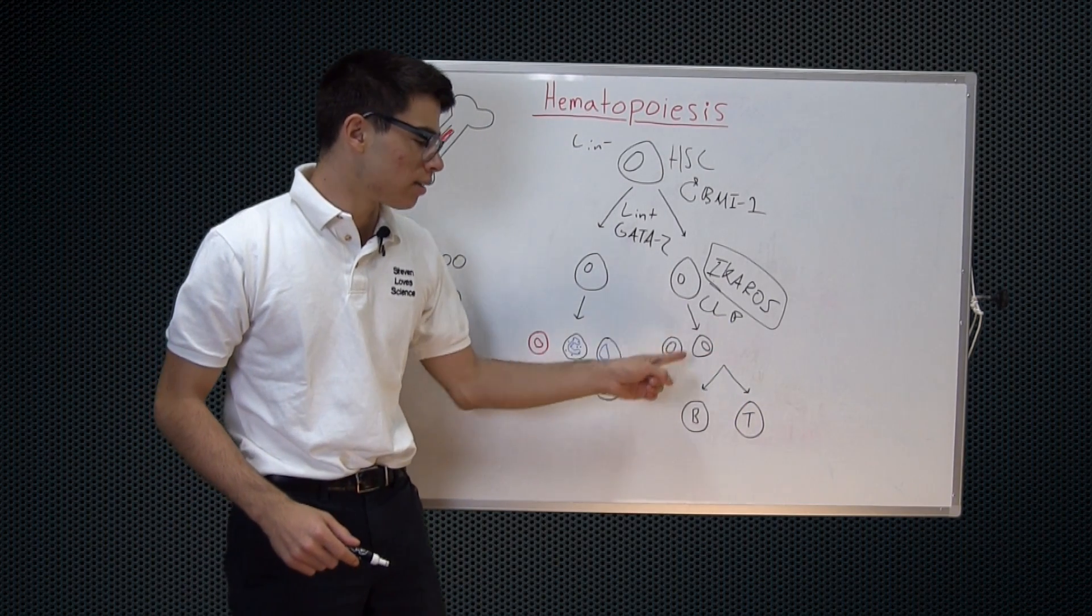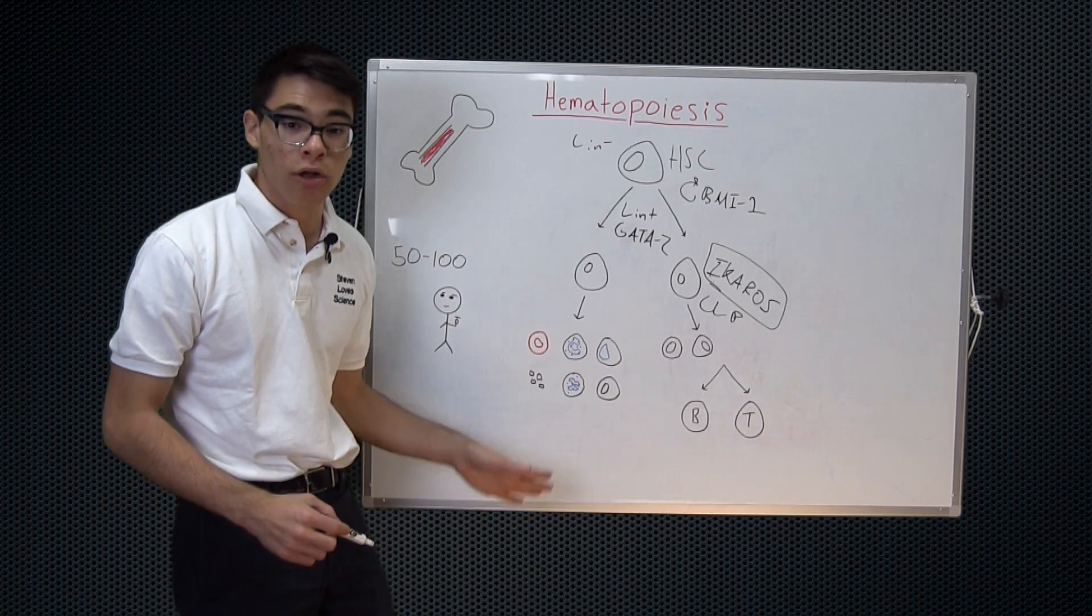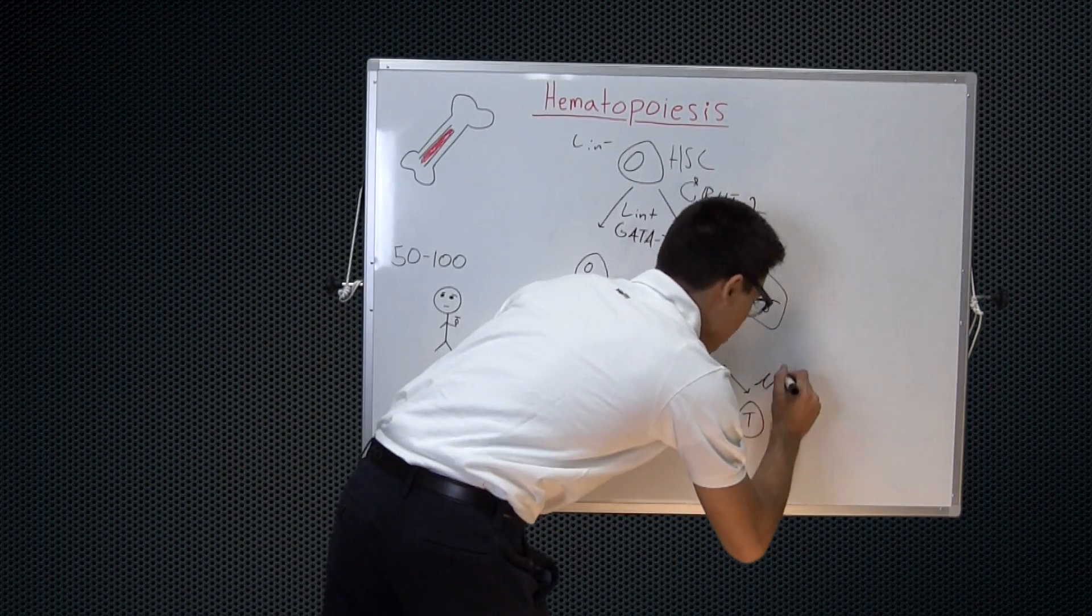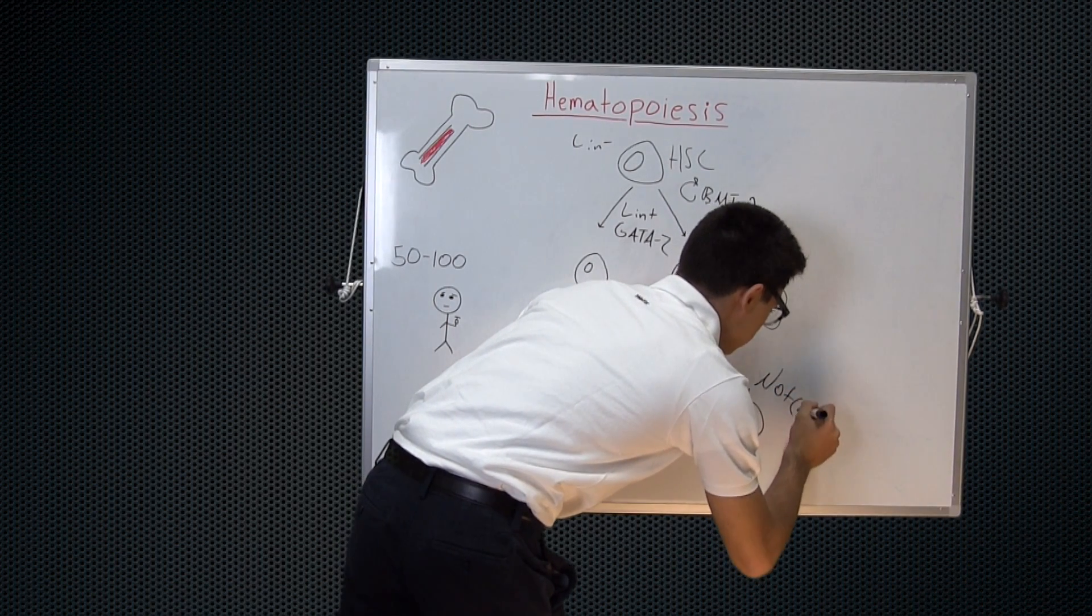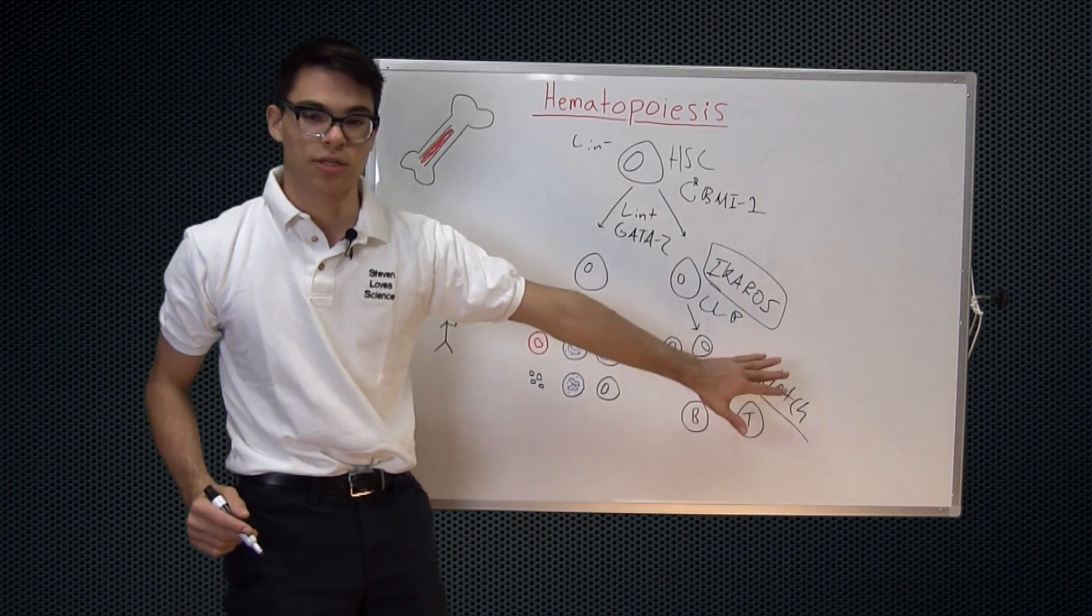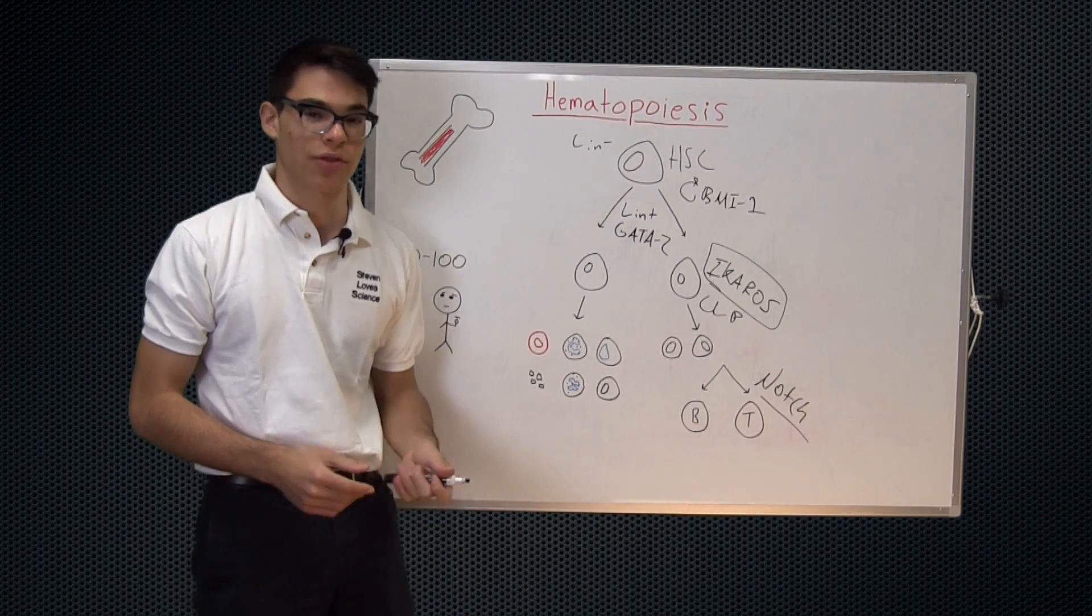So going down this line, the major transcription factors involved in either becoming a B or T cell is what's called the Notch family of transcription factors. And once again, this is very complicated and I don't want to get into. So just know that Notch family of transcription factors involved in B or T cell decision and some others in NK or dendritic cell decision as well as others.